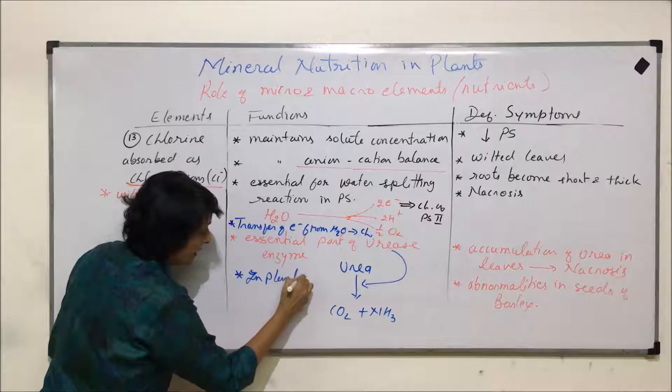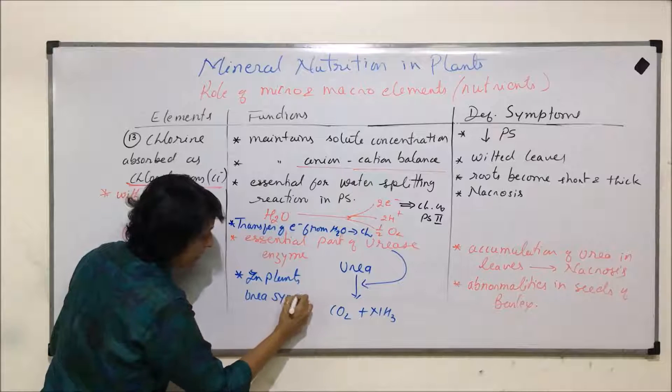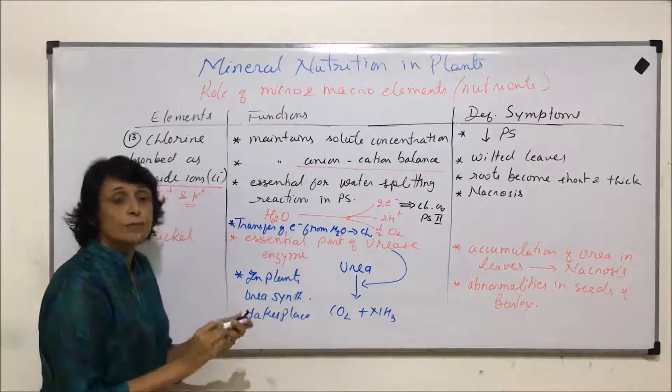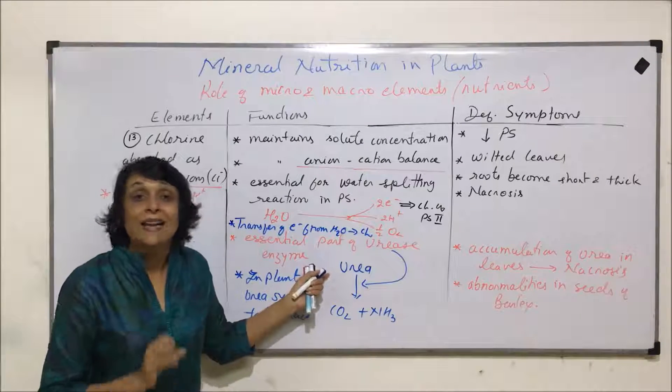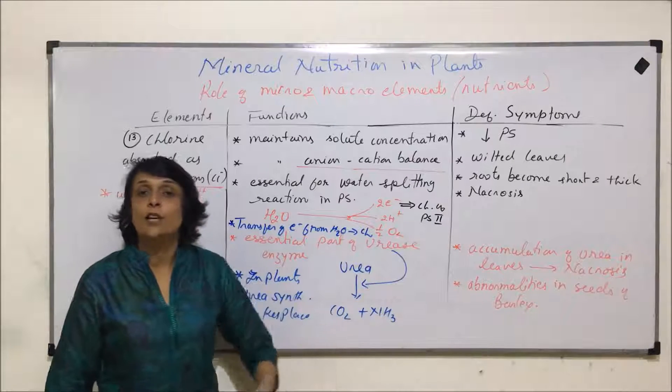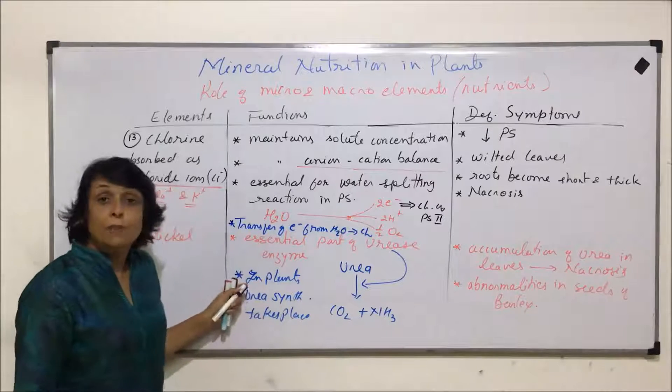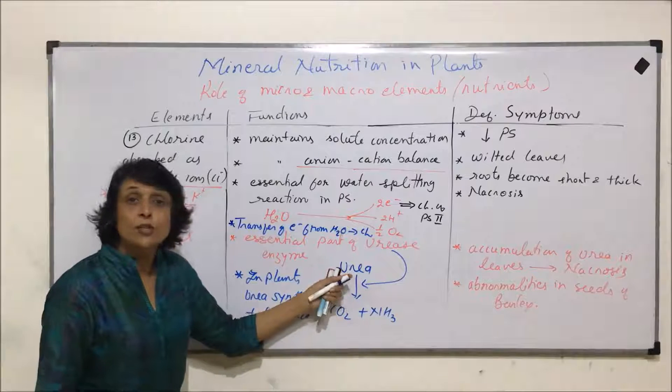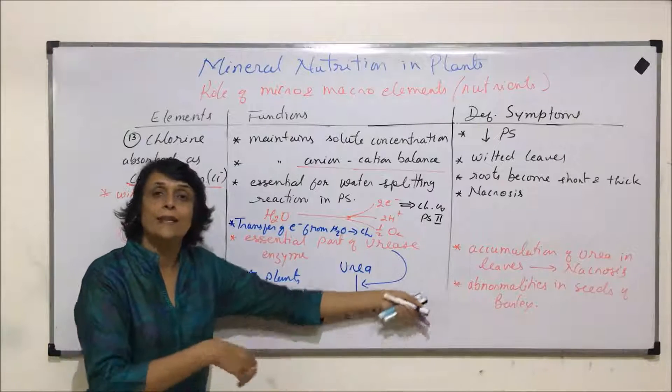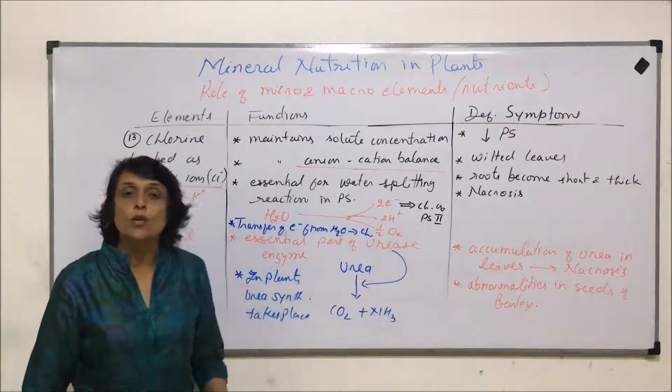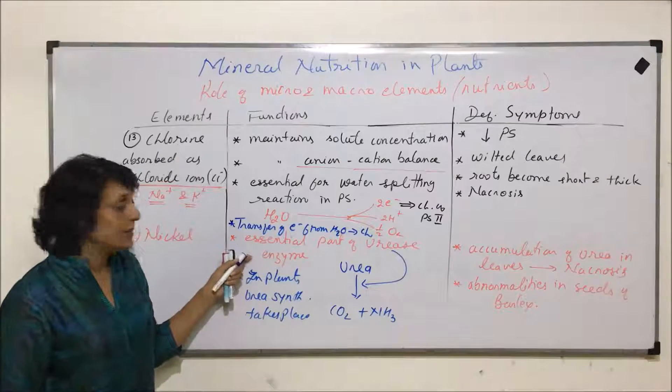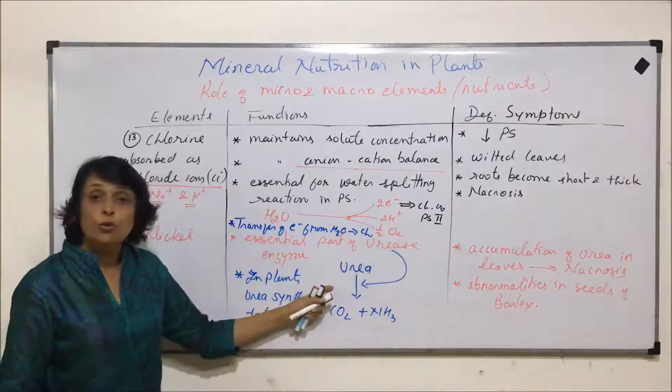In plants, urea synthesis takes place. Because whenever we use the term urea, what normally comes to our mind are animals, because animals excrete urea or it may get converted into uric acid. But in plants also, urea is produced, and because it is toxic to the plant, it has to be converted into carbon dioxide and ammonia. Then ammonia would be either reused or converted into non-toxic substances, and the enzyme which is going to help is urease. Chloride ions are essential part of this enzyme urease.